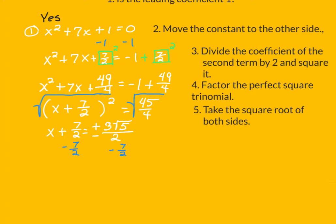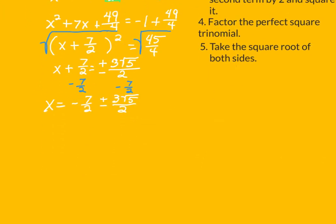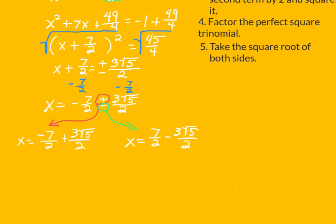We have to consider both the positive and negative cases. I am solving for x, so I want to move everything that is not x to the other side. I'm going to subtract 7 over 2 from both sides. That leaves me x equals negative 7 halves plus or minus 3 square root of 5 over 2. That means I have two cases to consider: what happens when I add that second term and when I subtract it.